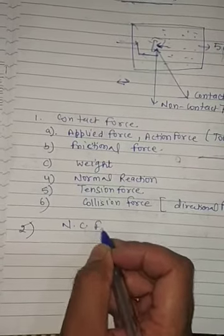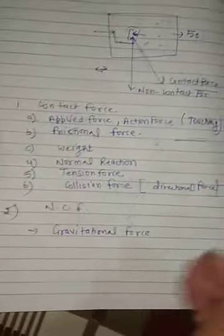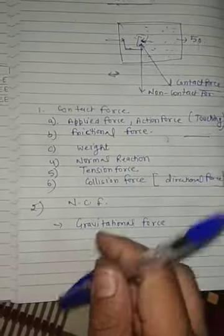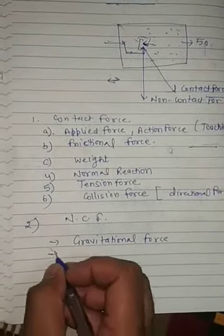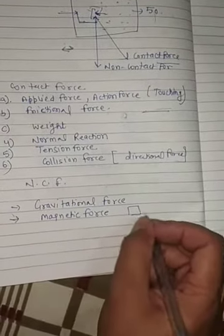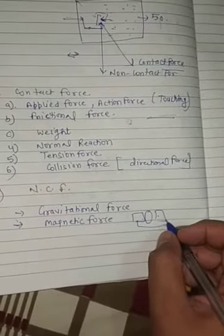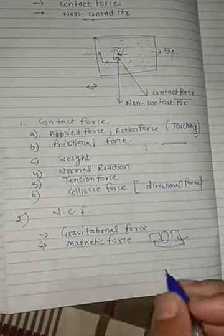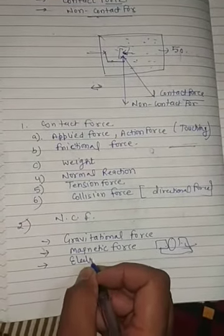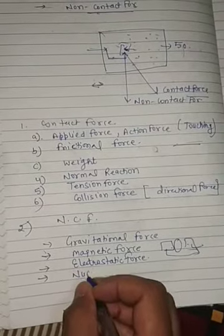Non-contact forces: First is gravitational force. Sun and earth are not tied with rope, but there is a force between them without touching. That is non-contact force. Second is magnetic force. One magnet attracts or repels another without touching. Third force is electrostatic force. Last force is nuclear force.